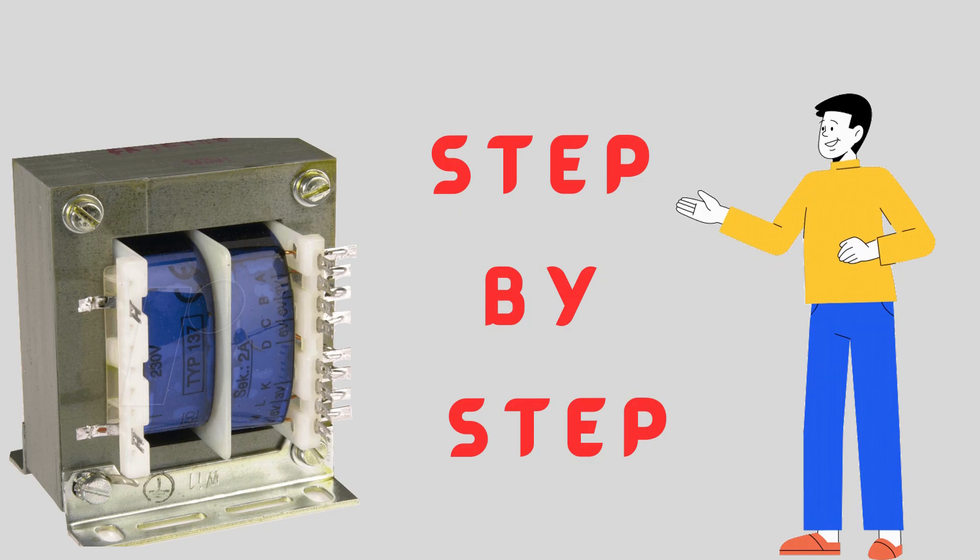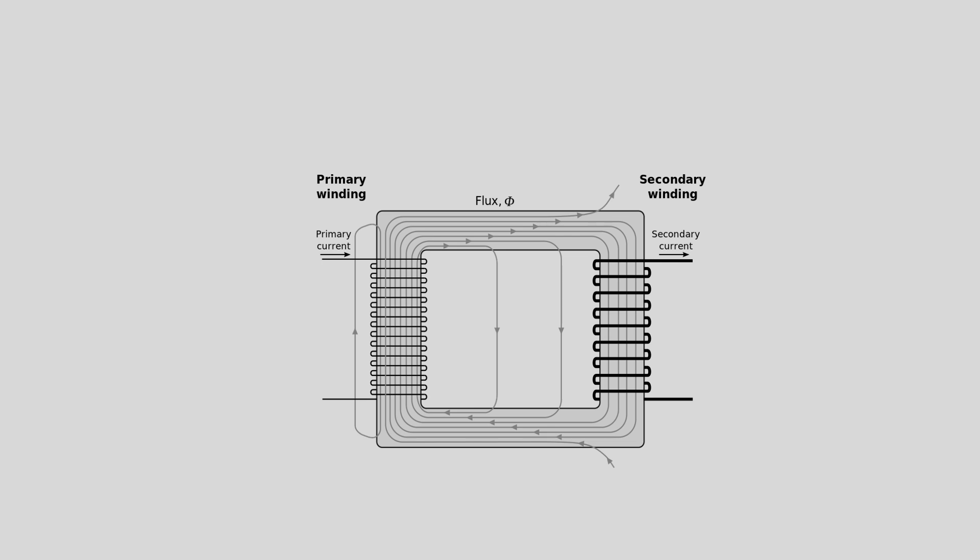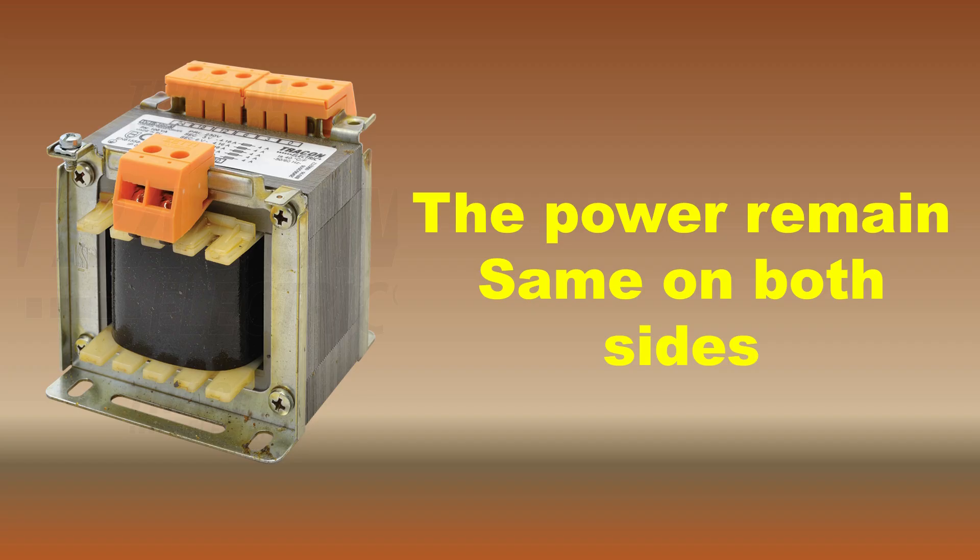A single phase transformer has a primary winding which connects to the input voltage and a secondary winding which provides the output voltage. The power remains almost the same on both sides except for minor losses.